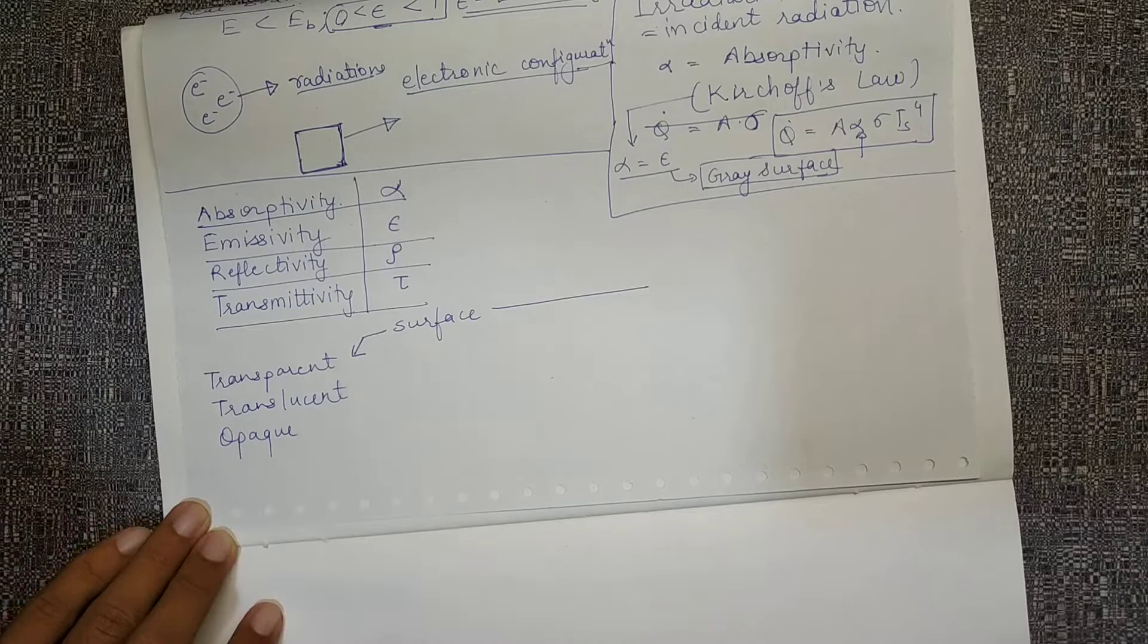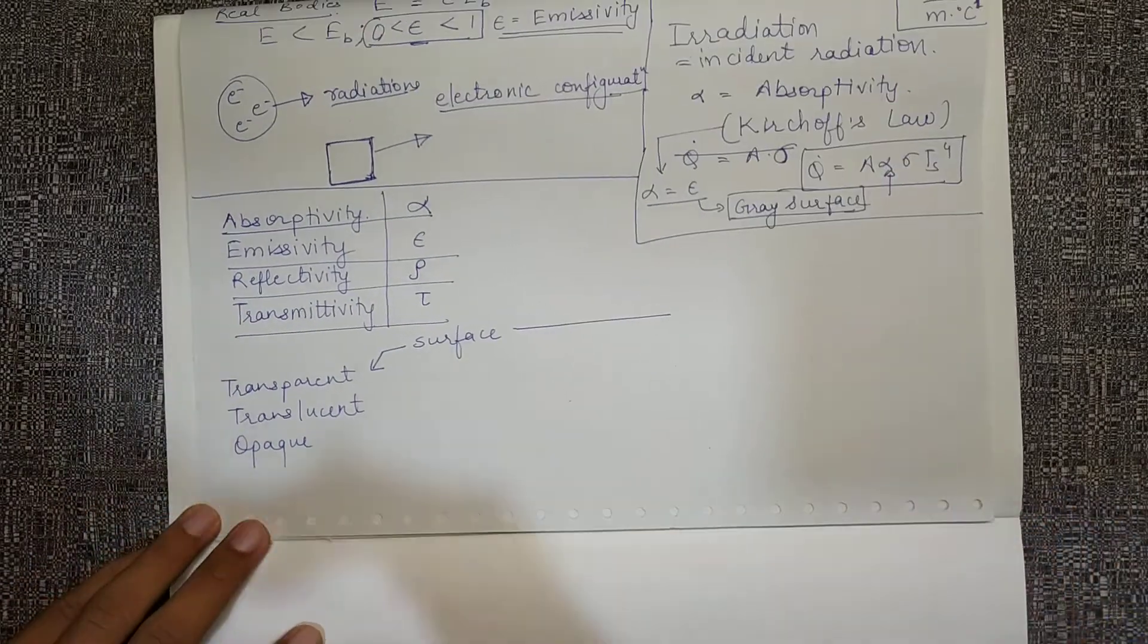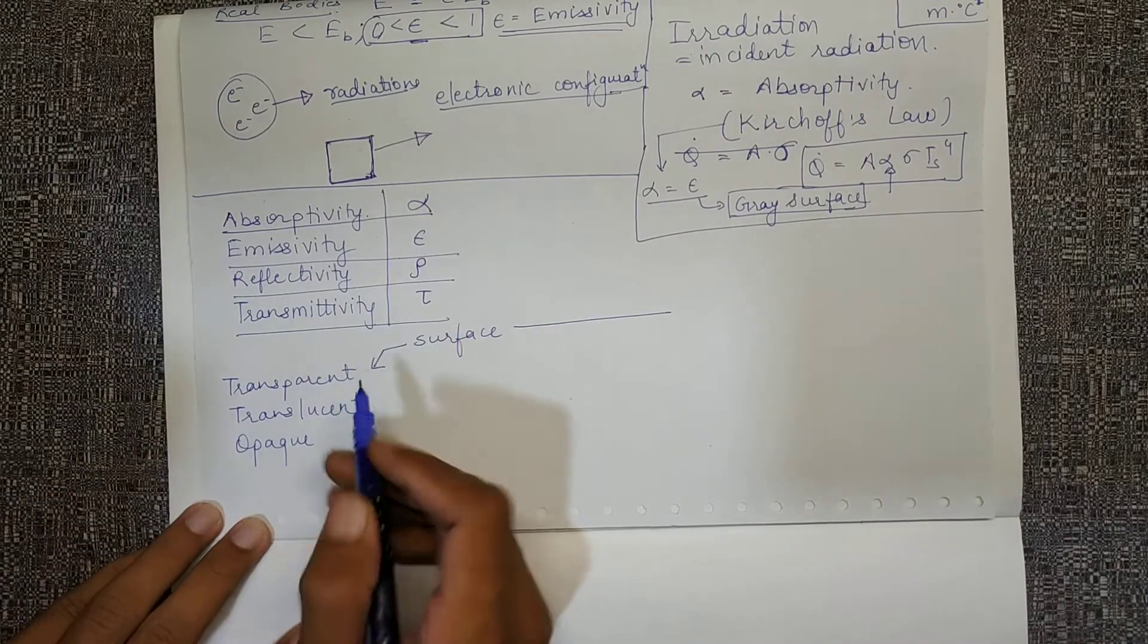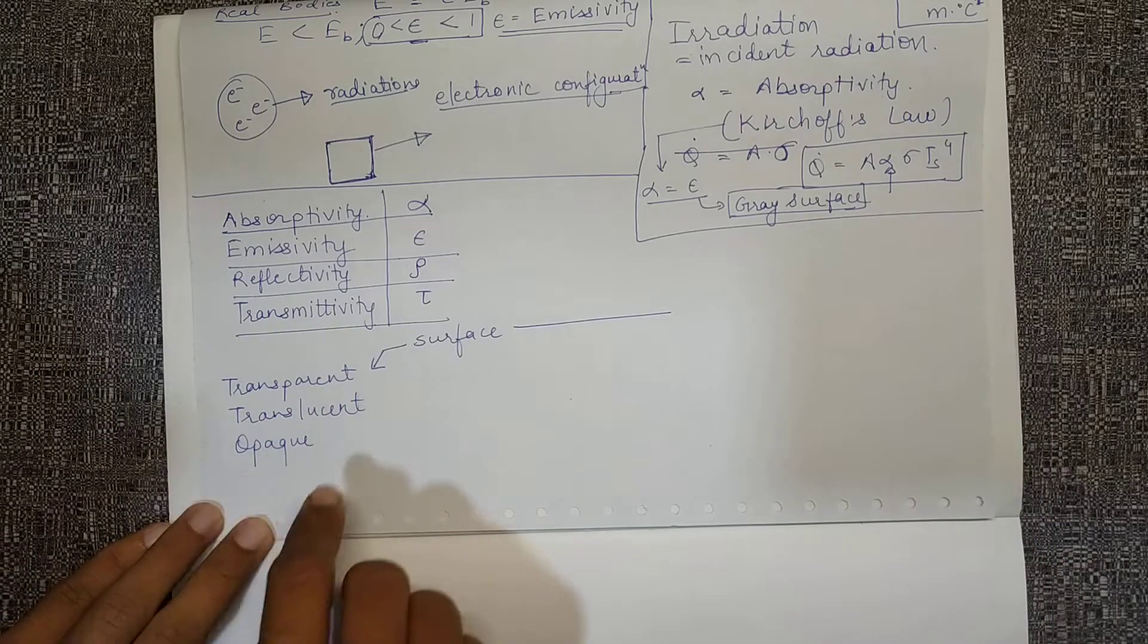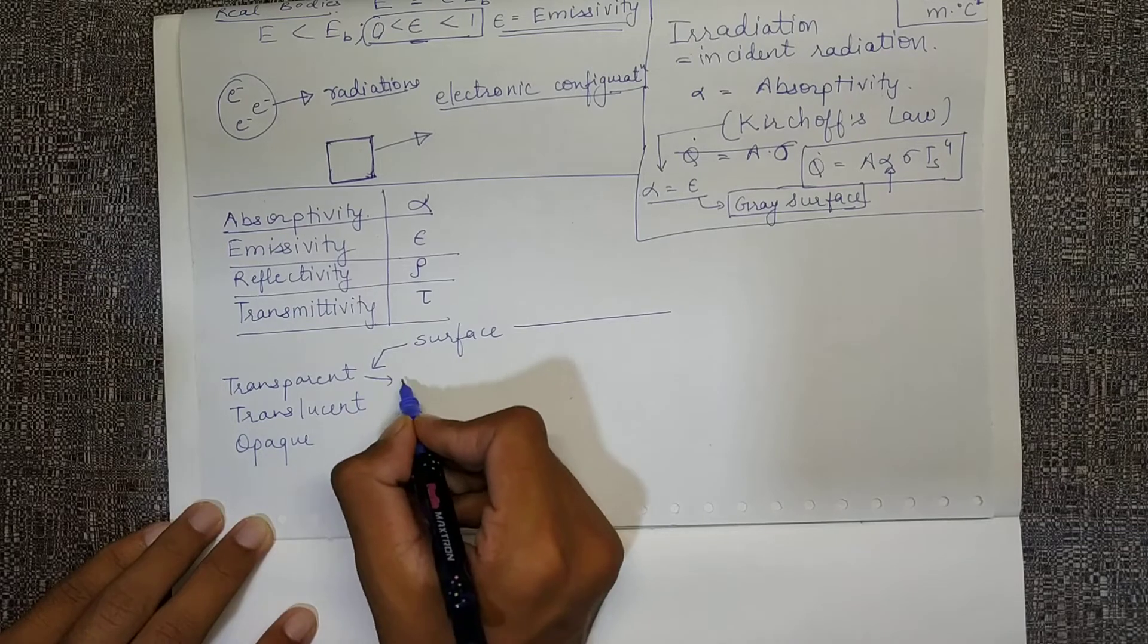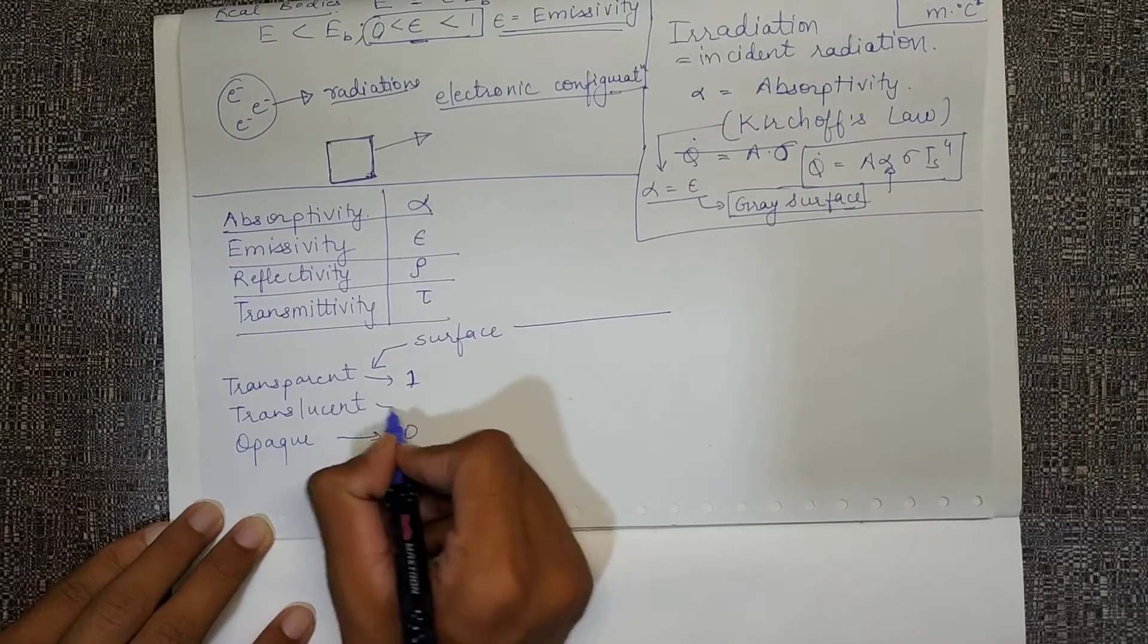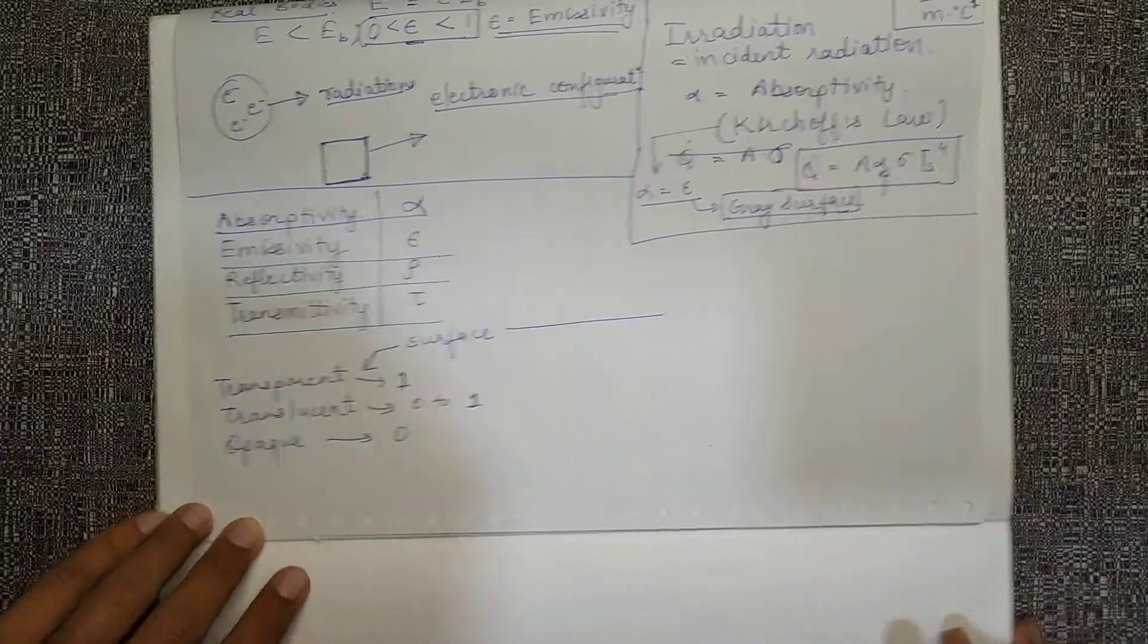Opaque means we cannot see the other side from one side. Transparent means we can completely look at the other side from the first side. Translucent means the visibility is not completely zero, not completely one. In transparent the visibility will be completely one, in opaque the visibility is completely zero, in translucent the visibility is between zero to one.